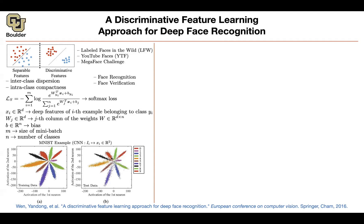This is especially important when the identities in your test data are not part of your training data and you want to identify whether two images are the same person — that's an open-set problem. The other case is a closed-set problem, where being separable is enough. But in the open-set case, you need discriminative features, and with new data there is going to be some confusion.